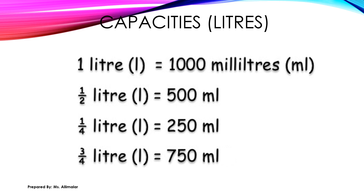Now look at the second fact: one over two liter — one over two means half — so half a liter equals 500 milliliters. Third: one over four liter — one over four is a quarter — so one quarter liter equals 250 milliliters. Fourth: three over four liters — three quarters — equals 750 milliliters.